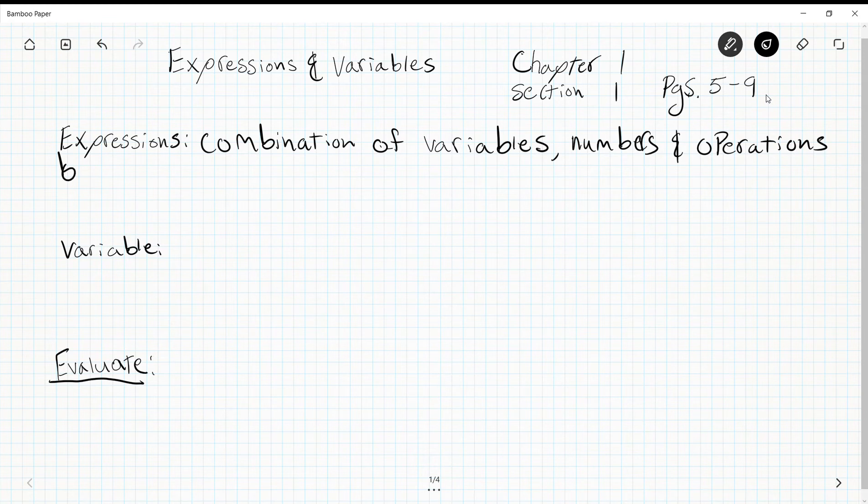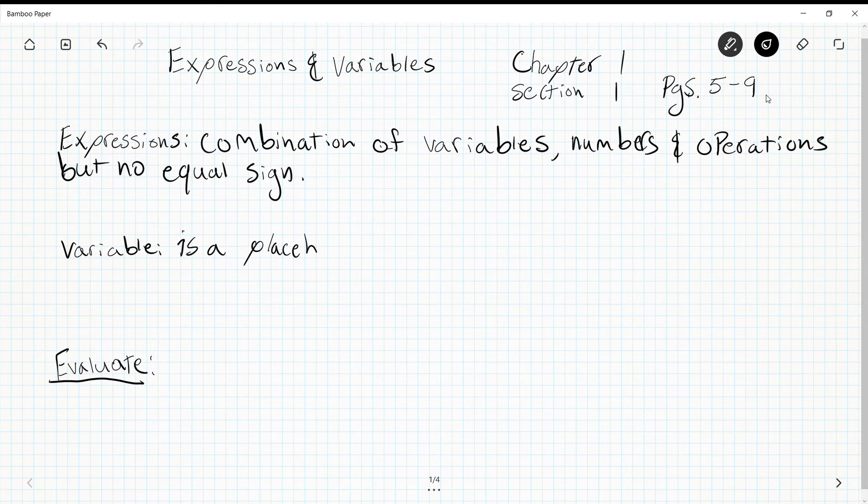Usually we use these to express different outcomes as we work. A variable is a placeholder for a number that can change based off of other items.